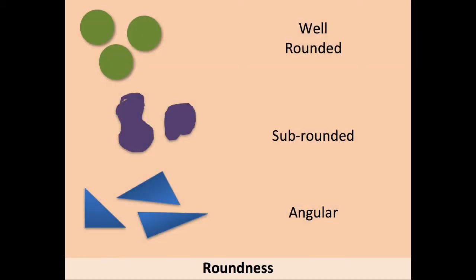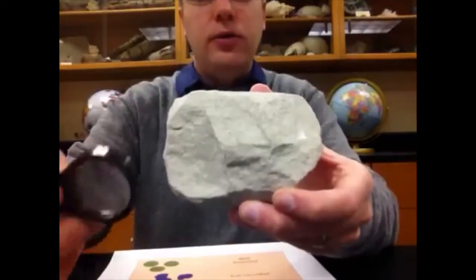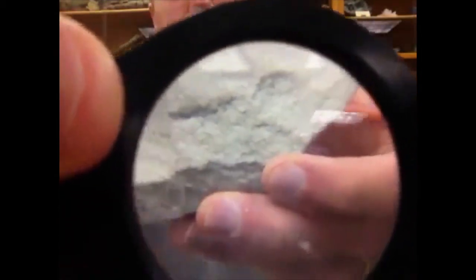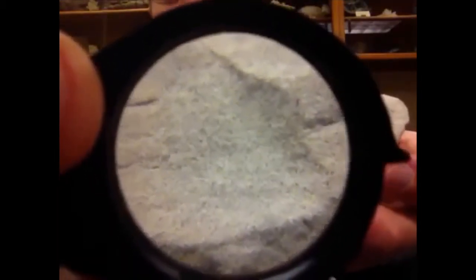For well-rounded grains, you typically will only see well-rounded in the sand-sized category. If I hold up this rock and we zoom in, even with the magnifying glass it's not going to show up too well on the video, but what you're seeing are very well-rounded grains — nearly perfectly sphere-shaped.